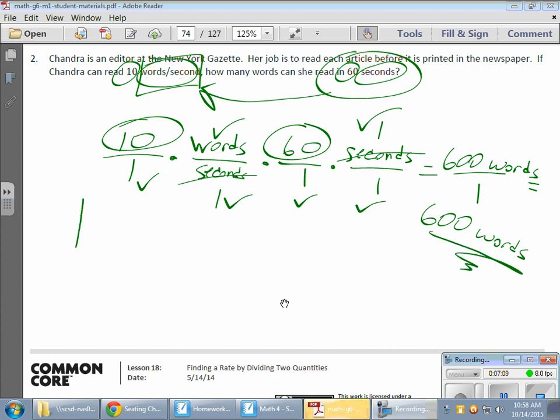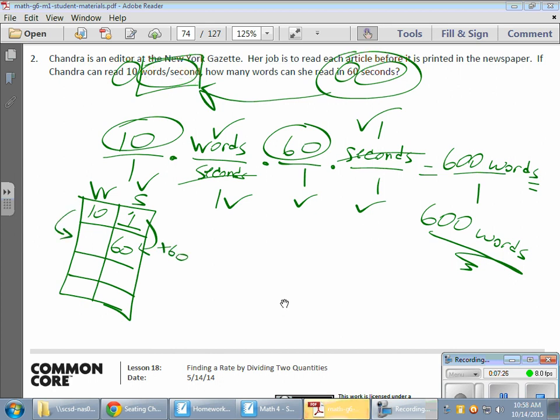Now, if you want to check that with the chart, pretty cool. So, we have words per second. And they gave us 10 words for every second. That's my unit rate. And they want to know how long for 60 seconds. Well, here it's times 60. Well, here's the times 60. So, 60 times 10. 600. And the unit is words.